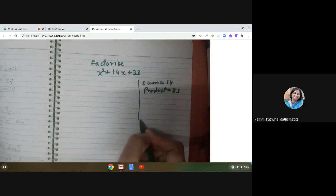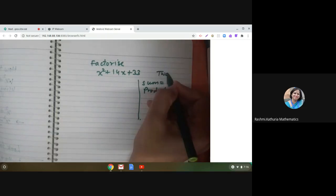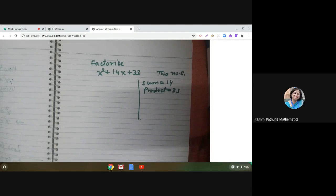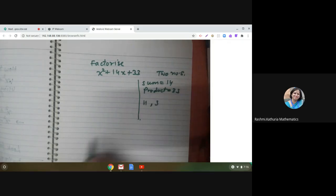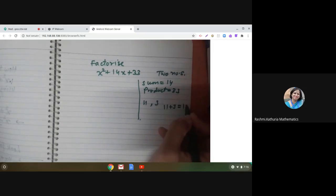We have to think of two numbers. Yes, 11 and 3. You say 11 plus 3 is 14 and 11 into 3 is 33.